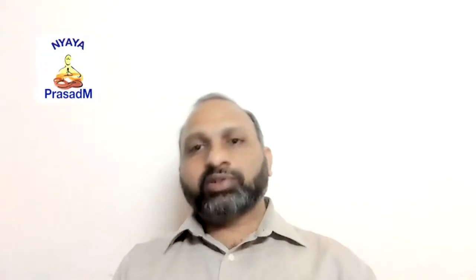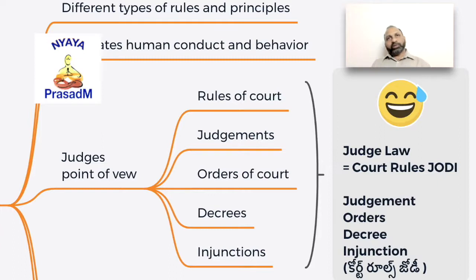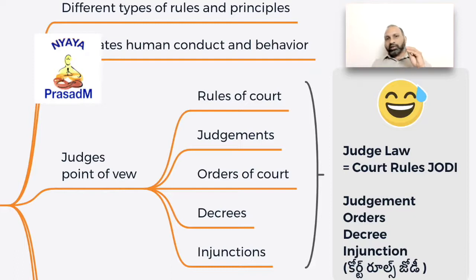It might sound difficult to remember all these words, so there is one more mnemonic: 'Court Rules JODI.' The spelling of JODI is J-O-D-I. So: Court and Rules come first, then J for Judgments, O for Orders, D for Decrees, and I for Injunctions. So 'Court Rules JODI' is always for judges — meaning rules of the court, judgments, orders of the court, decrees, and injunctions. These are the functions of law from a judge's point of view.